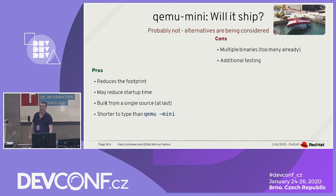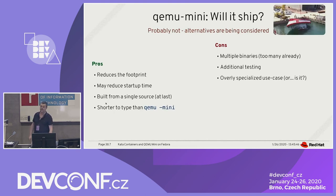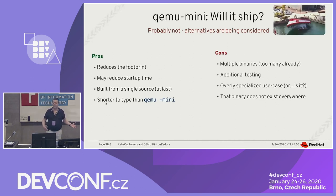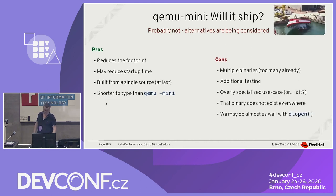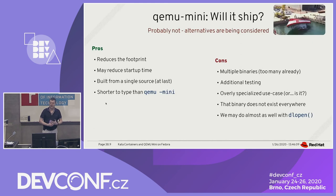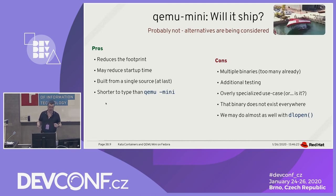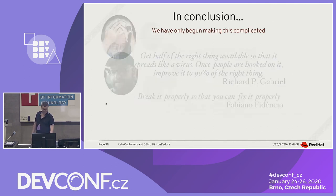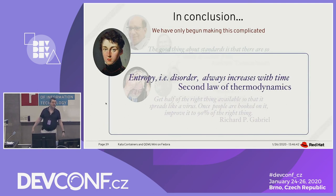On the pros of QEMU Mini: it reduces the footprint, may reduce start time, it's built from a single source — same spec file, same version, gets all the patches. And it's shorter to type qemu-mini than 'qemu -mini' — that has to be a pro. On the cons: multiple binaries when we already have too many; requires additional testing for its very different configuration; it's an overly specialized use case; and that binary doesn't exist anywhere else so config files would have different arguments in other distros. The killer is we think we may do almost as well simply by having QEMU drop the large stuff — like Spice, which brings tons of other libraries including ORC, the code information runtime, that you don't really want. We want to do an experiment with optional disabling before committing to anything like QEMU Mini.